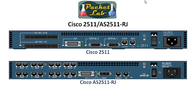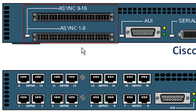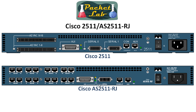Next up is the 2511 series, and basically the same differences apply. Here's your 2511 and here's your AS2511 RJ — exactly the same as the 2509s except you get eight additional async ports. So here you're going to have 16 ports served through two SCSI 68-pin connectors, and the AS2511 RJ is going to have 16 dedicated async ports. The same single-serial-port disadvantage applies if you want to call it that with your RJ router.